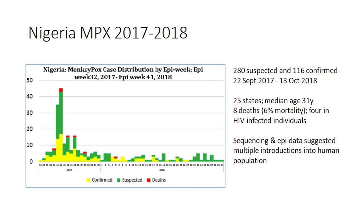Around this time, we knew that Nigeria's NCDC had been putting out information — we knew they were having an outbreak in 2017, but by 2018 it seemed to be coming under control and dying down. They did have some fatal cases, mostly in immunosuppressed individuals, and their sequencing and epidemiological investigation suggested there had been multiple zoonotic introductions into the human population.